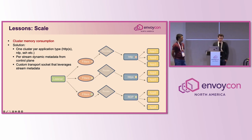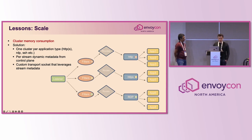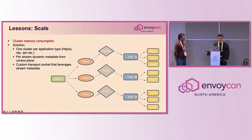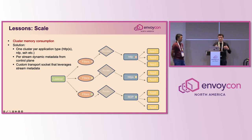We had to reduce the number of clusters. We needed to retain clusters equivalent to the application types we serve — HTTP, HTTPS, RDP, and SSH. Since we were already planning to reuse clusters across tenants, we needed a dynamic mechanism to inject metadata in downstream filters with the help of our control plane and then propagate that metadata into our clusters.